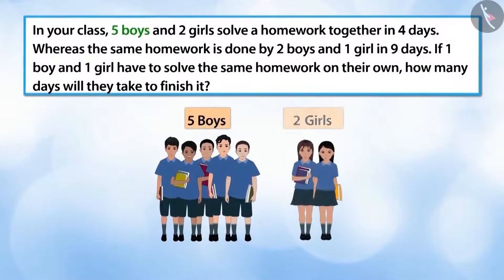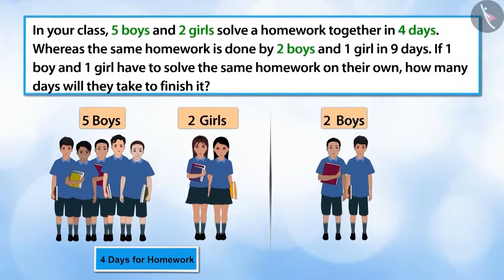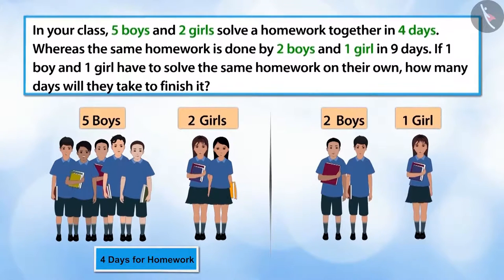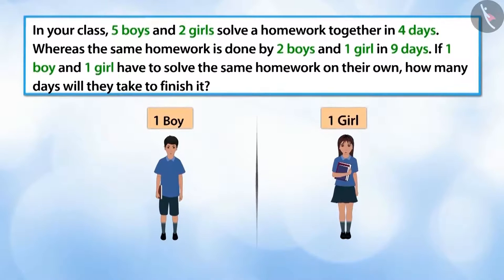In your class, five boys and two girls do their homework together in four days, whereas the same homework is done by two boys and one girl in nine days. If one boy and one girl together have to do the homework on their own, how many days will they take to finish it?